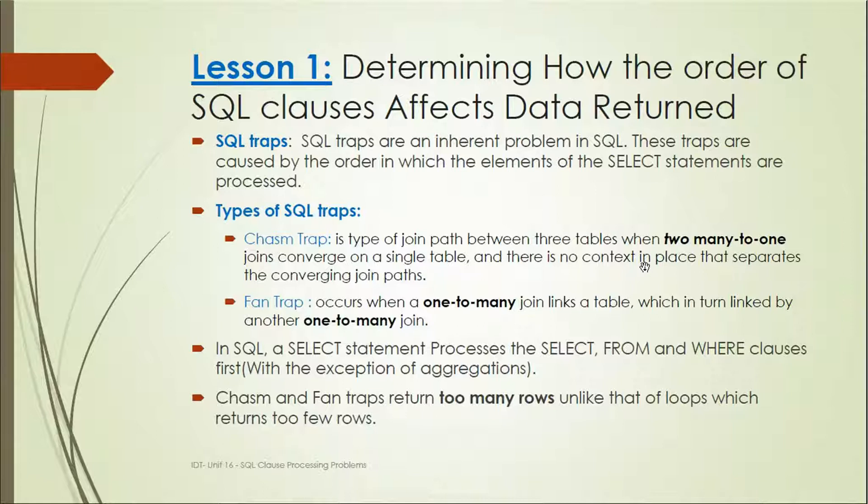Basically, in SQL SELECT statement, it processes the SELECT, FROM, and WHERE clauses first with the exception of aggregation. Then chasm and fan traps return too many rows, unlike loops which return too few rows.